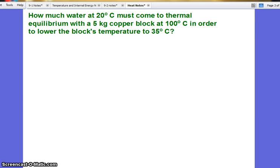Here's a calorimetry problem. It asks how much water at 20 degrees Celsius must come to thermal equilibrium with a 5 kilogram copper block at 100 degrees Celsius in order to lower the block's temperature to 35 degrees Celsius.